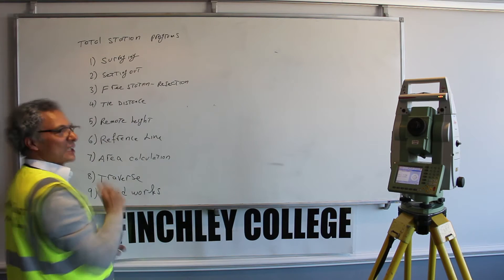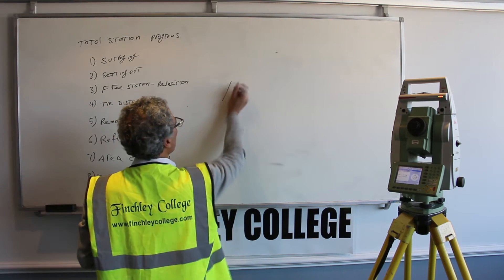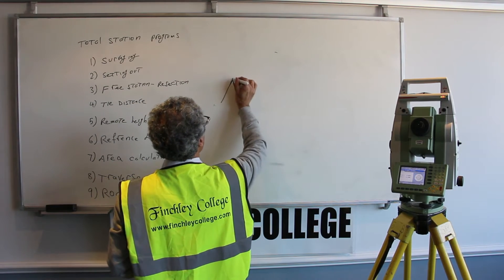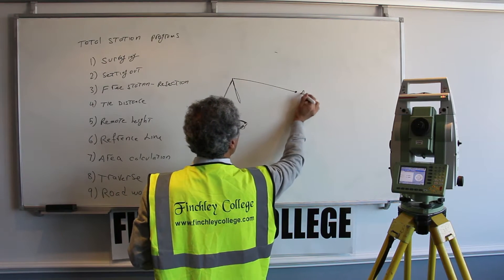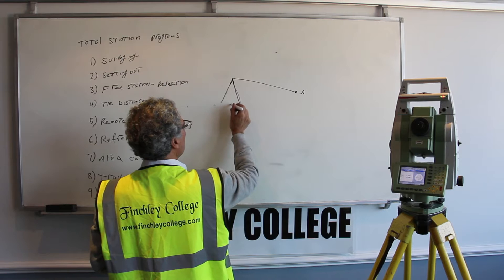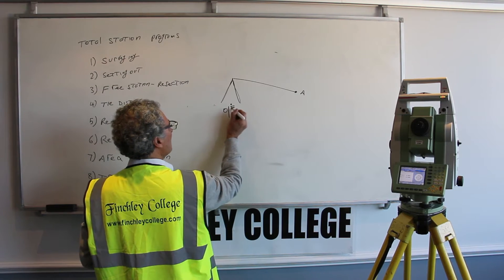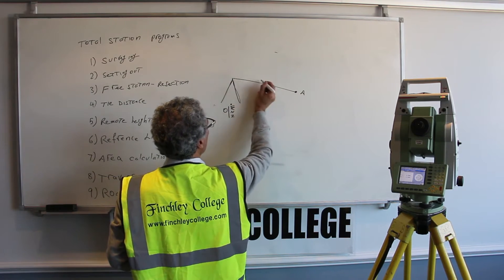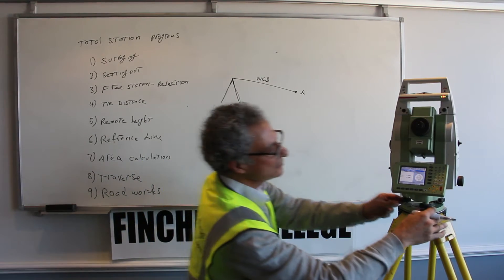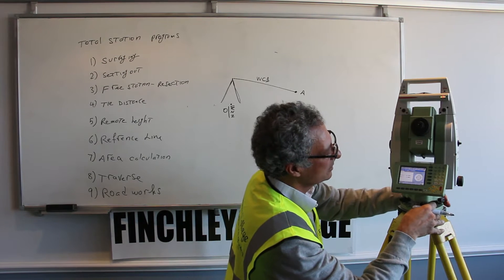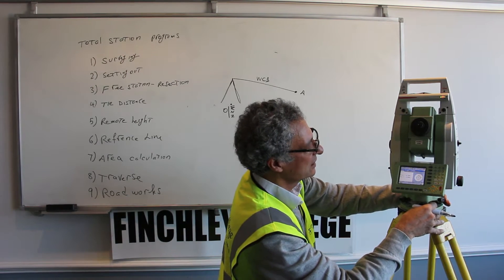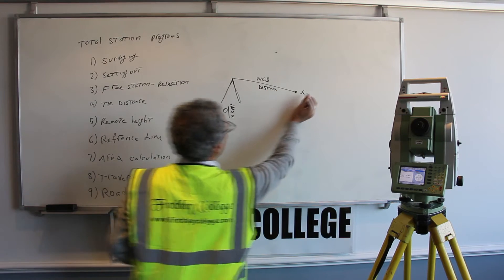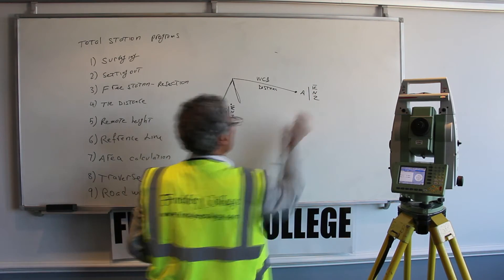The main program is surveying. You will set up your total station, and you will sight to a point — for example, point A. The instrument already knows its coordinate station point, called O. It knows its easting, northing, and height. It knows the whole circle bearing, which will be shown on the screen, and you press measure and it will measure the distance and display the coordinate of the point you're surveying.